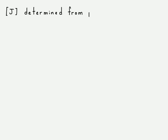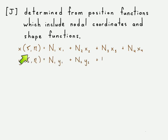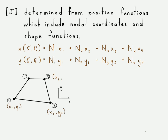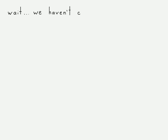The Jacobian matrix is determined from the position functions, which include the nodal coordinates and the shape functions. The position x anywhere throughout the element equals the shape function for node 1 times the position at node 1, plus the shape function for node 2 times the position for node 2, and so on to the fourth node — same for the y direction. All the shape functions are written in terms of xi and eta.